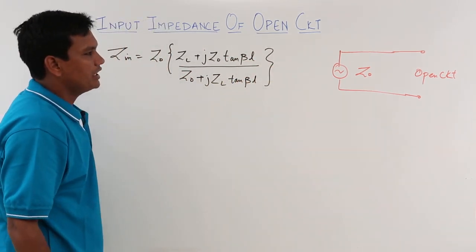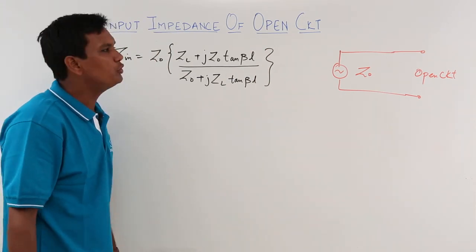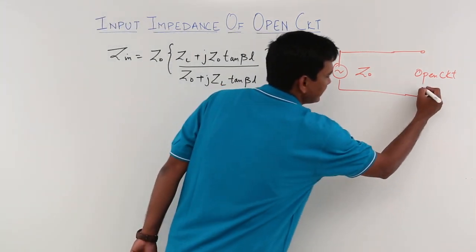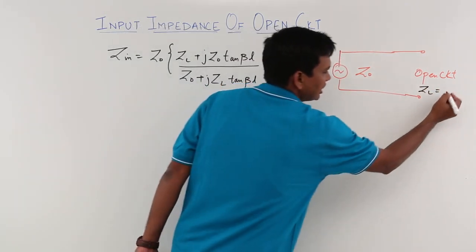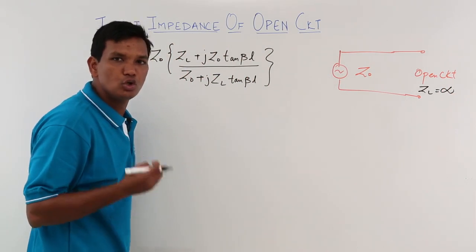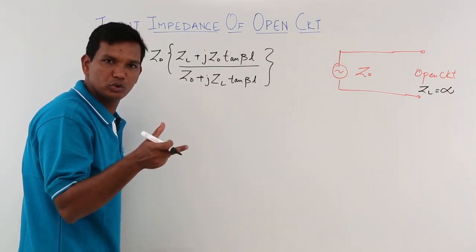Now, what I know is if the circuit is open, what should be my Z L in this case? If your circuit is open, Z L will be nothing but infinity. You know that. It means your load impedance for an open circuit is infinity.